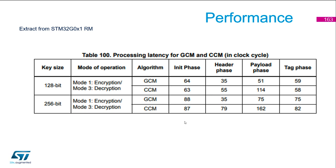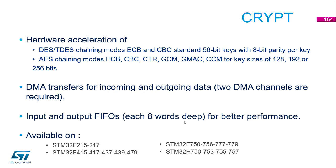You can see the input phase, computation phase, and output phase for ECB, CBC, and CTR, and the numbers for CCM and GCM — no mode 2 or mode 4 there because there is no key derivation. Let's talk now about CRYP. CRYP is our hardware acceleration of AES, but also of DES and Triple DES with chaining modes ECB and CBC. AES chaining modes supported are ECB, CBC, CTR, GCM, GMAC, and CCM, and for key sizes of 128-bit, 192-bit, and 256-bit. DMA transfer for incoming and outgoing data is also available.